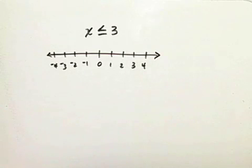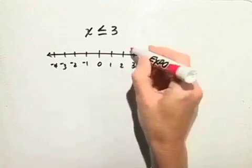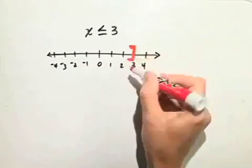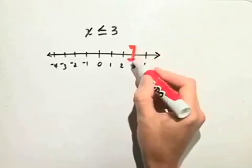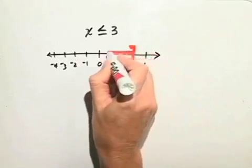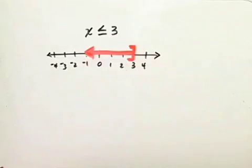In this case, 3 is a possible solution to this inequality. We'll use the bracket with the square corners to indicate that 3 is included, and we want values that are less than 3 or to the left of 3.